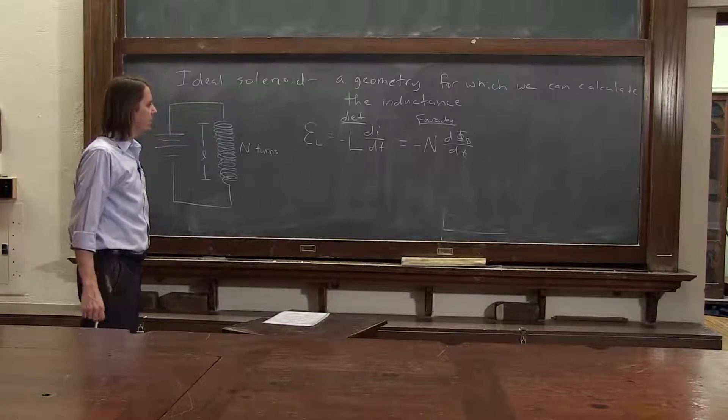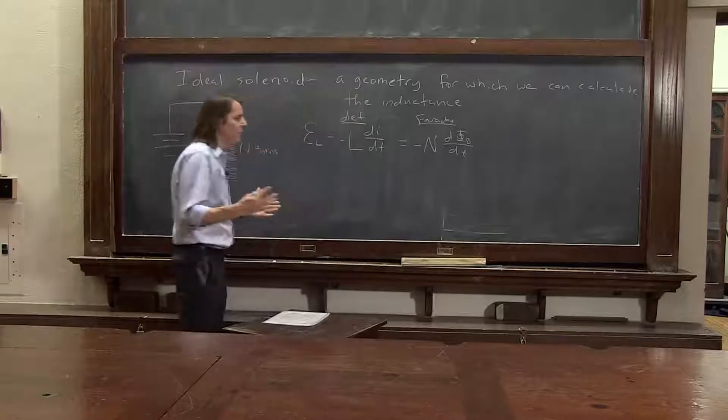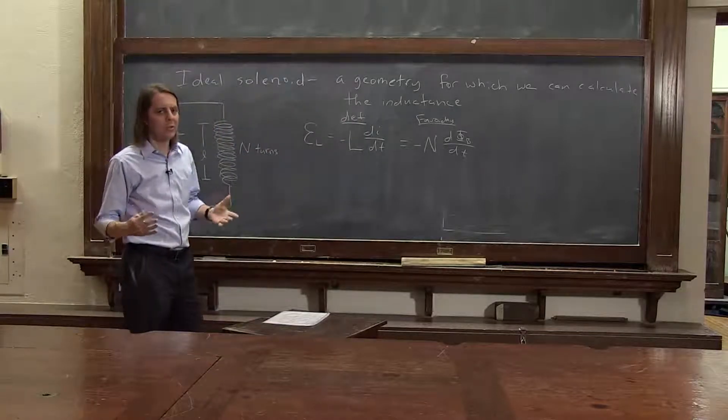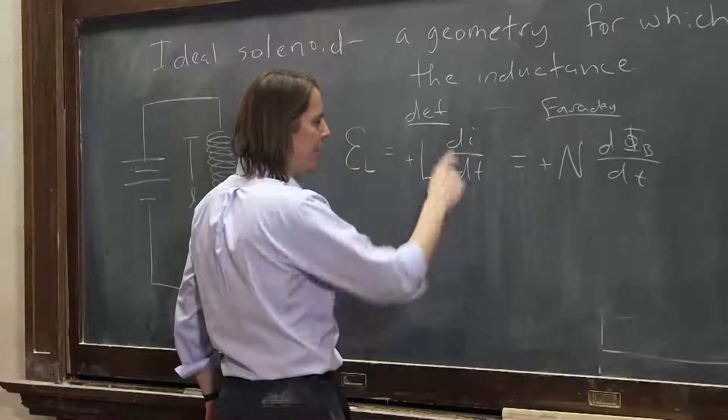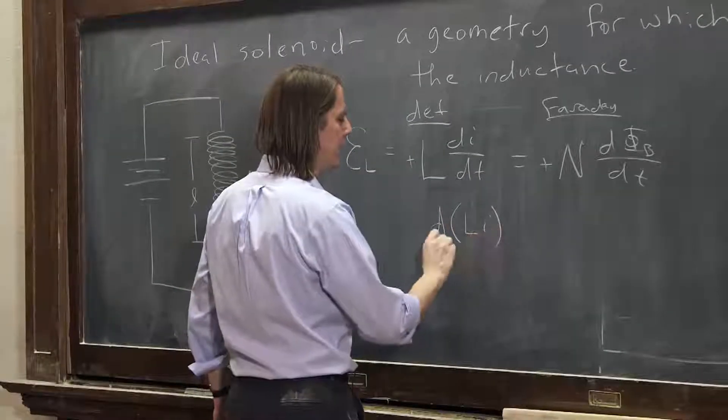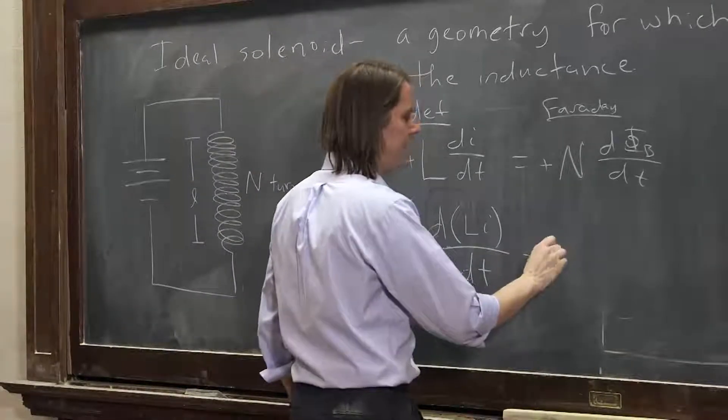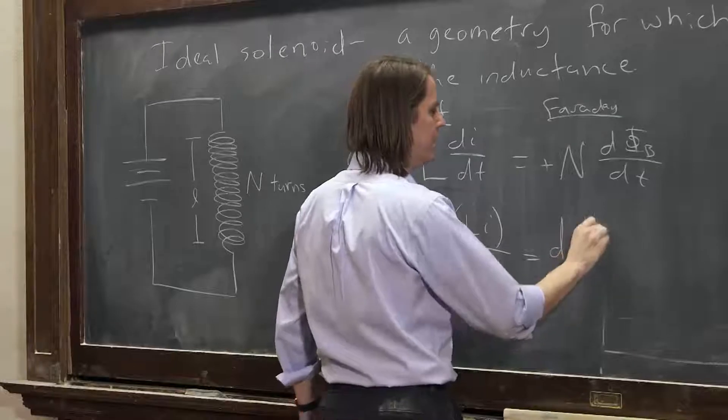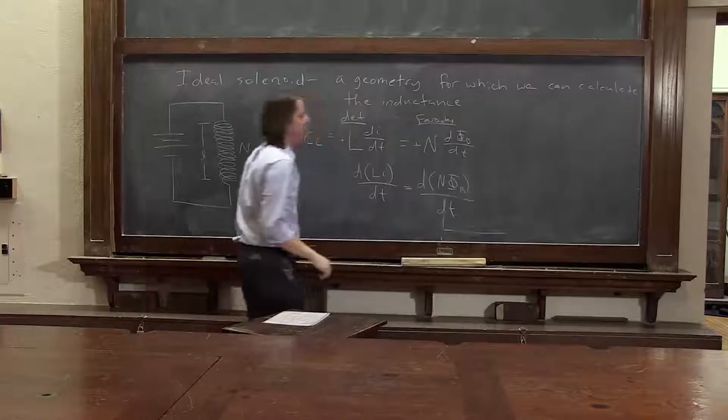So the quick thing then we can do is go ahead and stick these things in the time derivative. We know that they are constant. Let's just stick them in. And we can also just make them both positive to make it pretty.